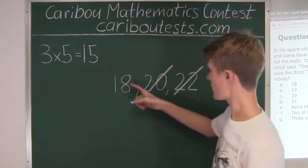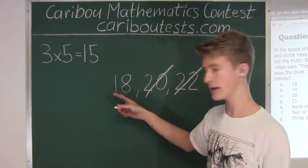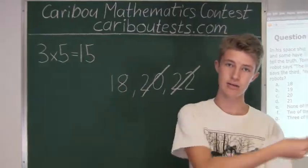So, we know that the fourth robot can only have three arms and must be telling the truth. So, now let's prove that.